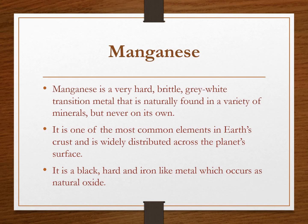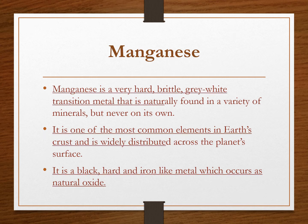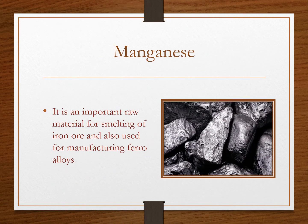We will start with manganese. Manganese is a very hard, brittle, gray-white transition metal that is naturally found in a variety of minerals but never on its own. It is one of the most common elements in earth's crust and is widely distributed across the planet's surface. It is a black, hard, iron-like matter which occurs as natural oxide.